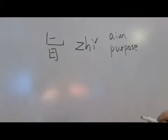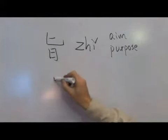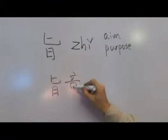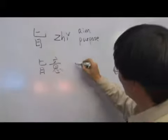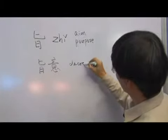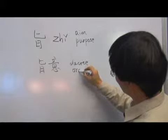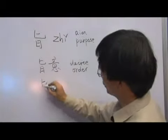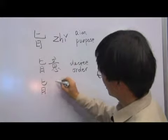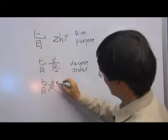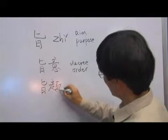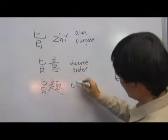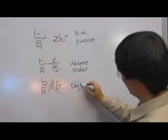So zhī yī is one example — it means a decree or an order. And zhī qi, where qi means interest. So it has to do with purpose and objectives, zhī qi.